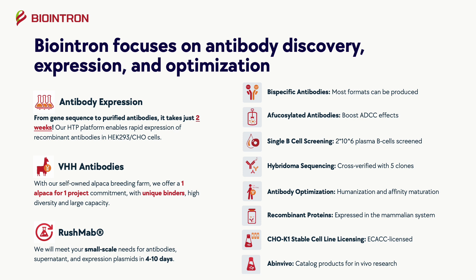We will also meet your small-scale needs for antibodies, supernatant, and expression plasmids in 4-10 days with RushMap. We also have several other services, including but not limited to bispecific antibody production, afucosylated antibodies, single B-cell screening, hybridoma sequencing, antibody optimization, recombinant proteins, CHO-K1 stable cell line licensing, and catalog products for in vivo research.